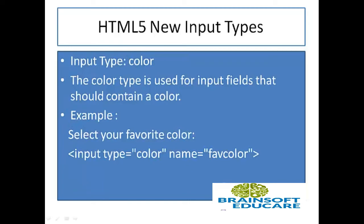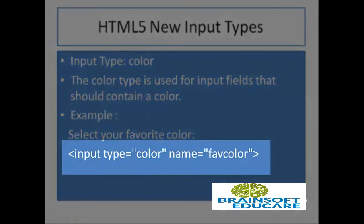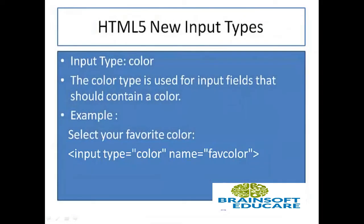The first element is input type color. Color type is used for input fields that should contain a color. In the example, we define the input type as color and provide a name for it. This is a new element in HTML5.